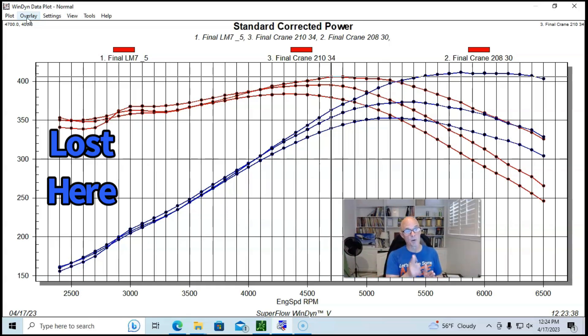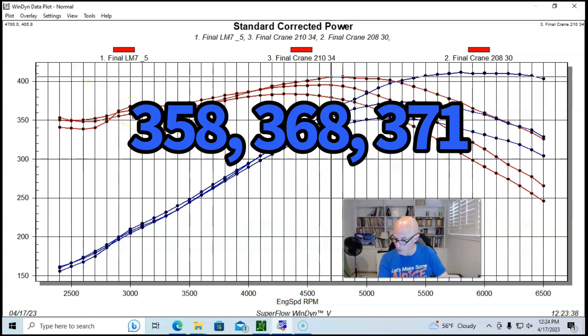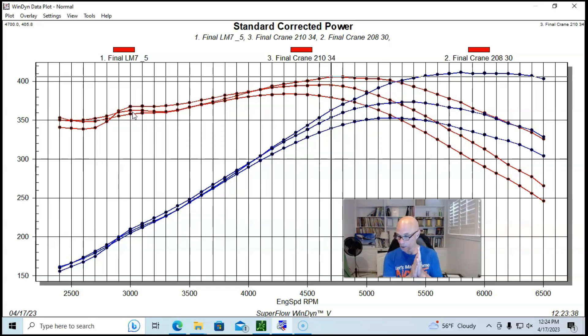This 210 cam was better than the stock cam from 2,900 RPM all the way out. You can see though that it did dip down below 2,900 RPM - it actually lost low speed torque compared to the stock cam. Our stock cam had 358 foot-pounds, the reverse split had 368 foot-pounds, and the 210 cam had 371 foot-pounds. We've only changed that by nine or ten foot-pounds of torque.